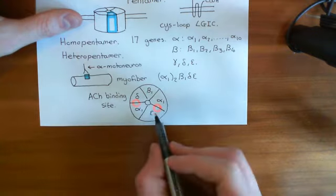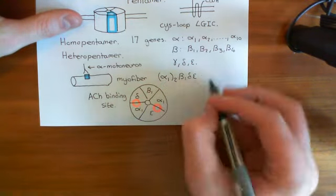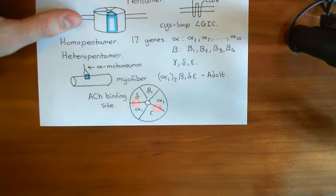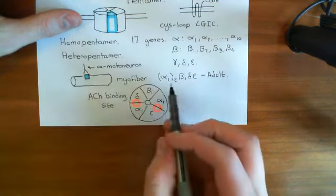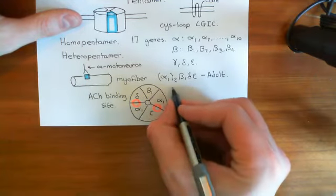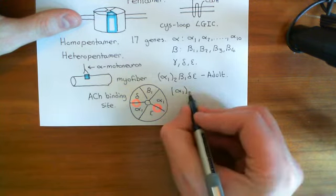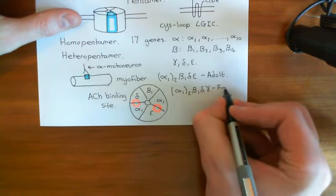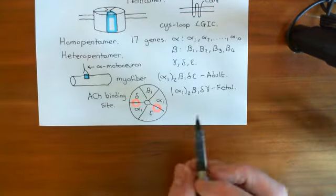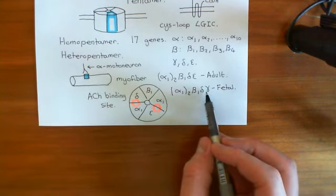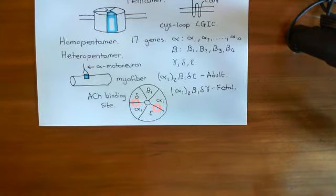This is the adult form of the skeletal muscle nicotinic acetylcholine receptor. In fetal humans, when we are within the womb, there is a different receptor on the myofibres that differs by one protein subunit. In the fetus, the skeletal muscle nicotinic acetylcholine receptor is the alpha-1 squared, beta-1, delta, gamma subunit composition — the fetal form. The only difference is that instead of an epsilon subunit, you have a gamma subunit.